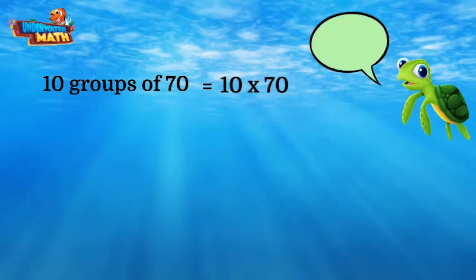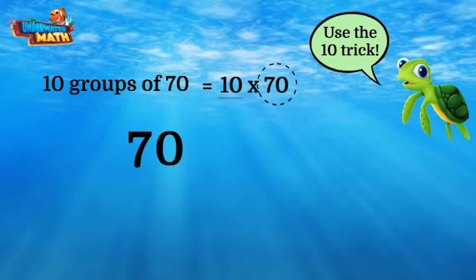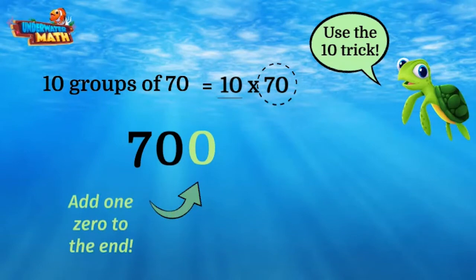Let's use our cool new 10 trick to solve this problem. 10 groups of 70 is just 70 with one zero on the end, which makes 700. 700 pieces of trash were picked up from the beach that day. Wow, what a difference just 10 people can make!